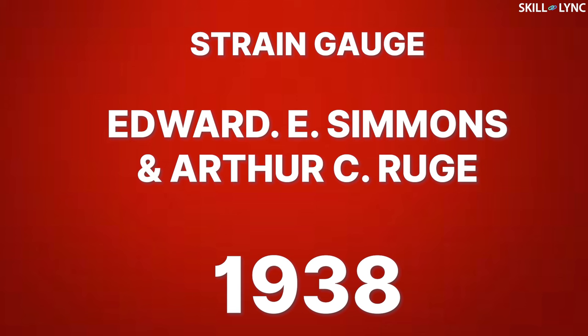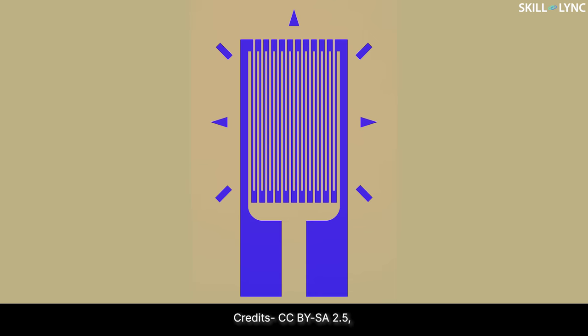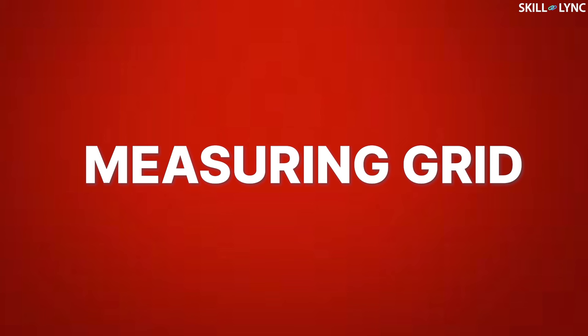Strain gauge was invented by Edward E. Simmons and Arthur C. Ruge in 1938. The strain gauge consists of metal strips that are arranged in a zigzag manner on non-conductive material. The thickness of these metal strips is of the order of 3 to 5 micrometers. These thin metal strips are collectively called the measuring grid.